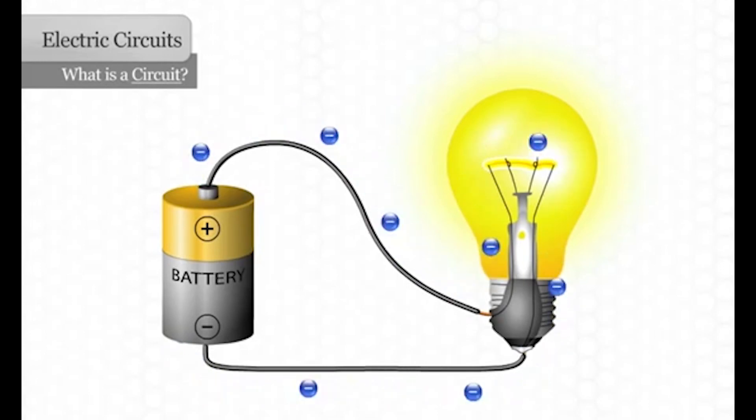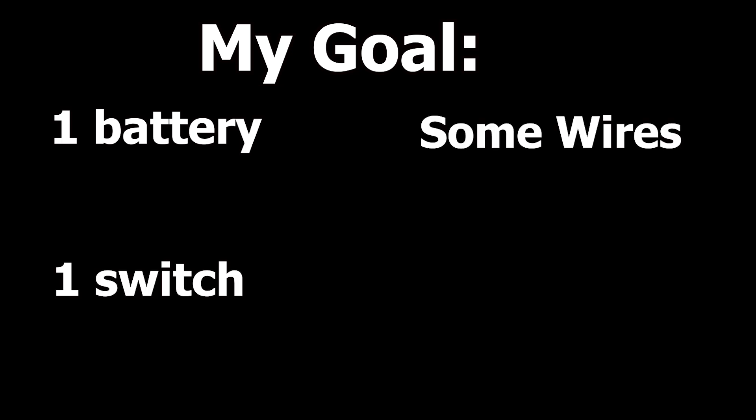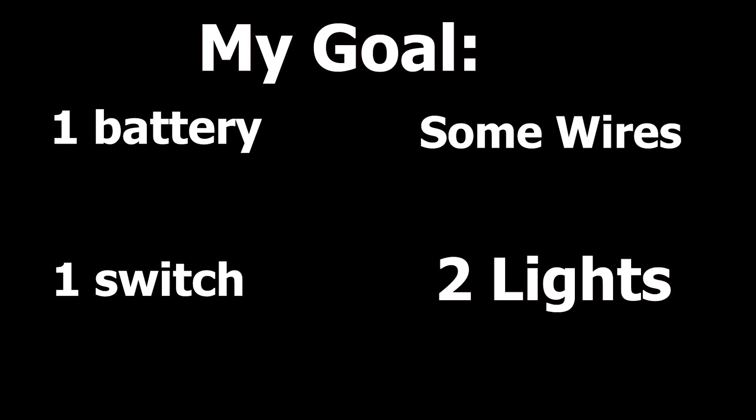So what is my goal? My goal is to make an electrical circuit that consists of one battery, one switch, some wires, and two lights. Each light should be able to light up individually, but my main goal is just that it works.